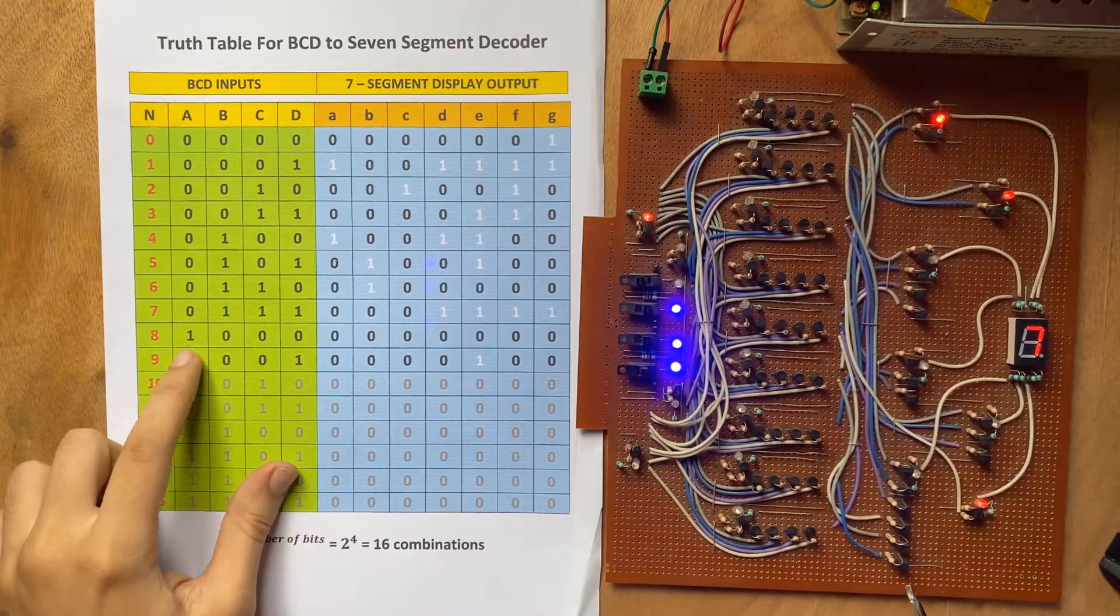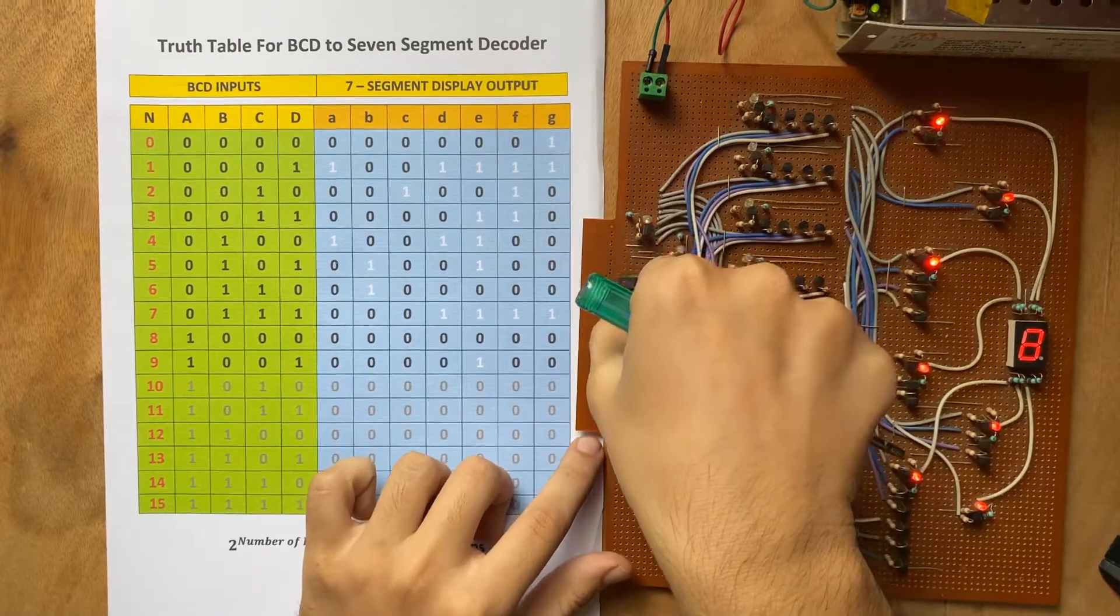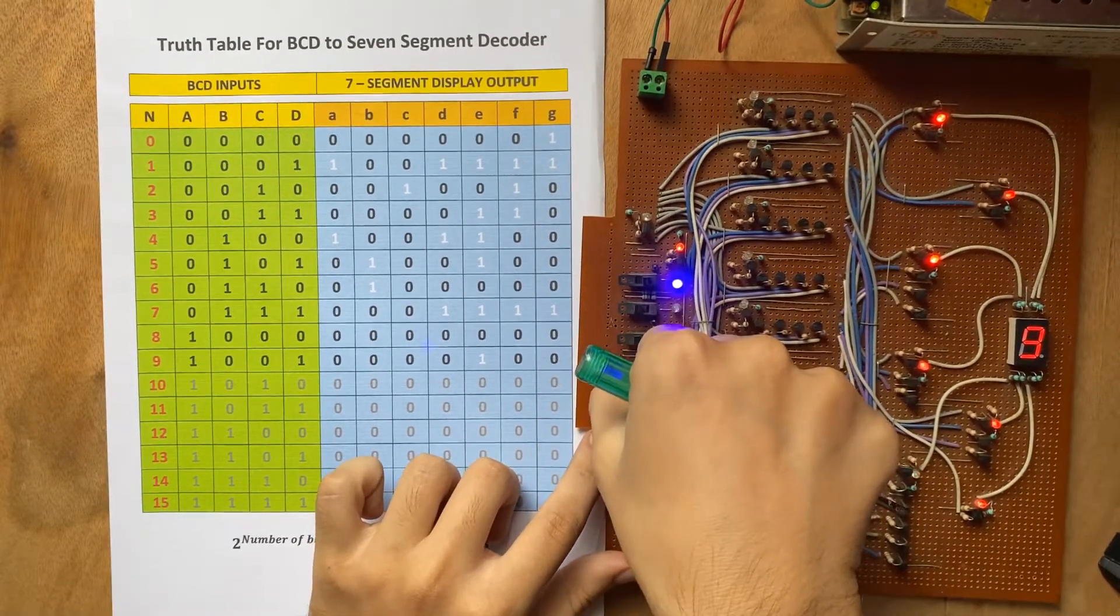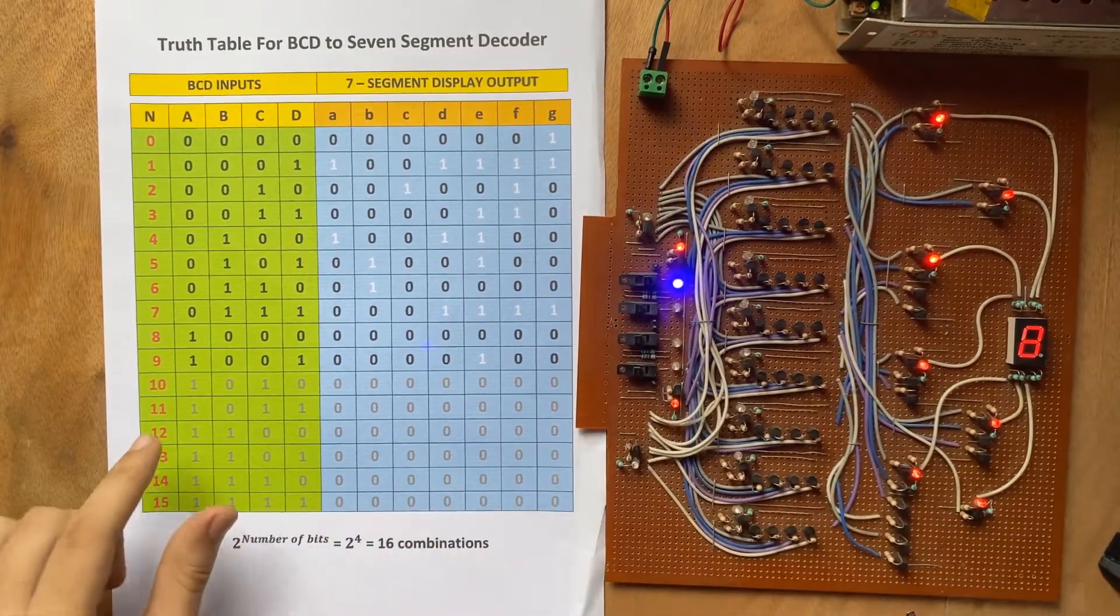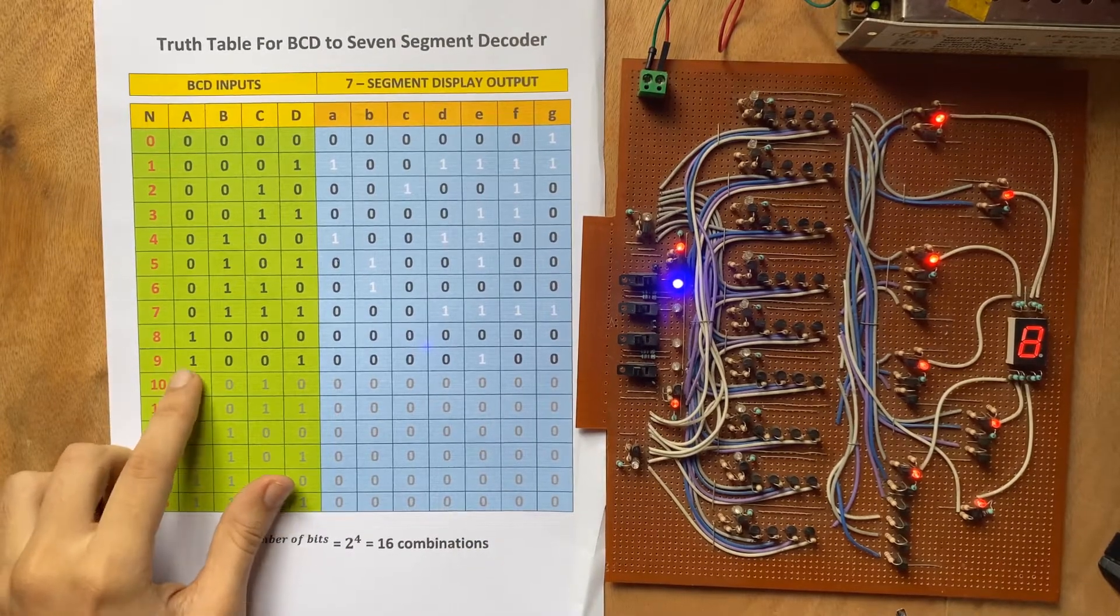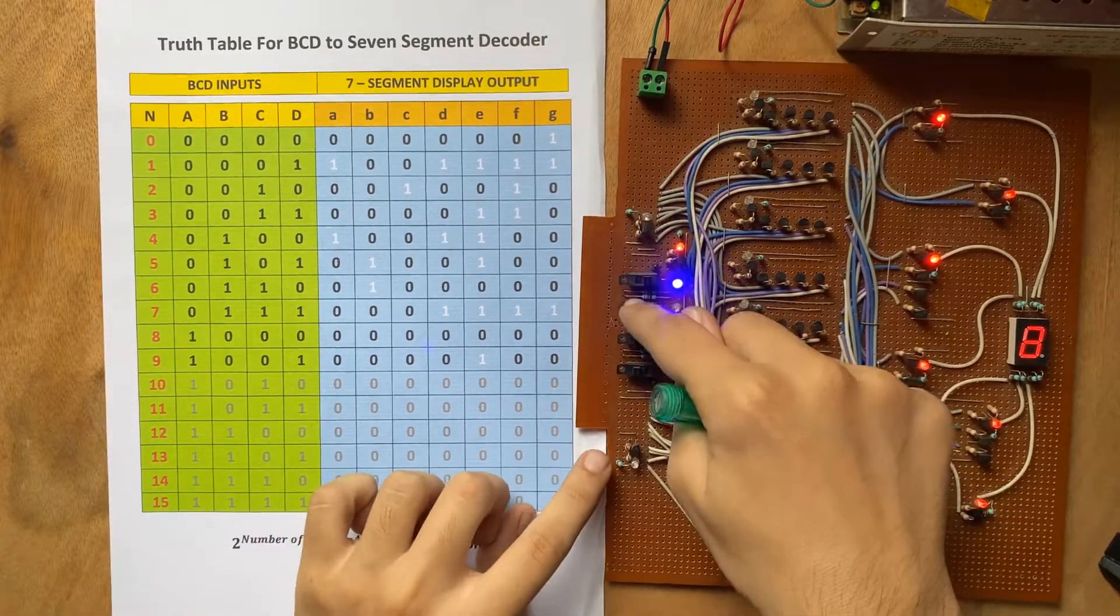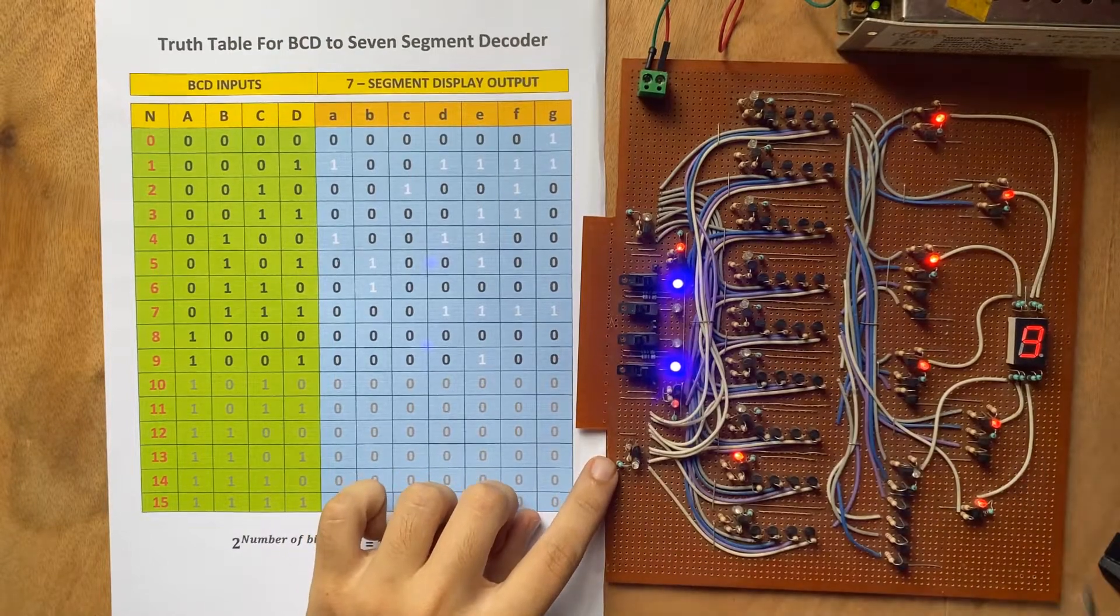Next for 8, it is 1000, so 1000, it is 8. Now last for 9, it is 1001, so 1001, it is 9.